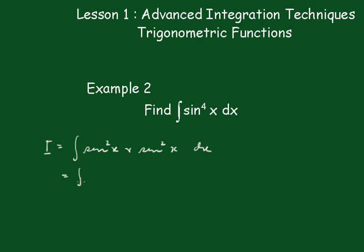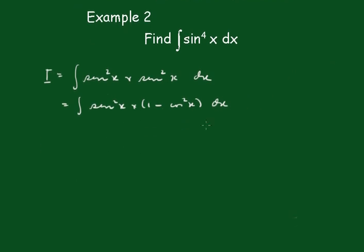This one becomes the integral of sin squared x times 1 minus cos squared x dx, which is sin squared x minus sin squared x cos squared x dx.